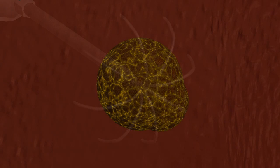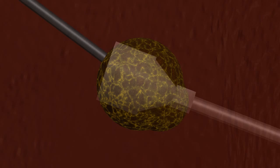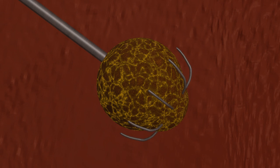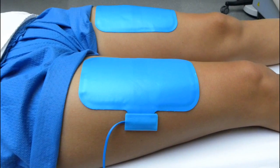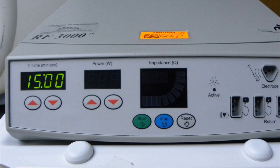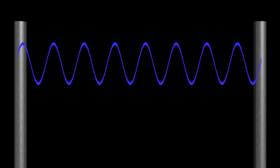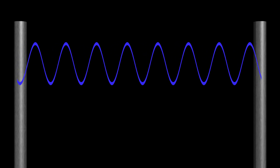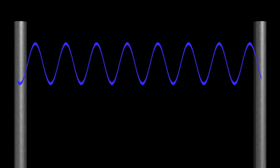We use CT guidance to guide the needle into the back side of the tumor, then deploy those tines and watch them wrap around the tumor using CT guidance. Once appropriately positioned, we place grounding pads on the patient's thighs and legs and hook the needle up to a radio frequency generator. Radio frequency is an alternating current that goes between the needle and the grounding pads on the patient's thighs.